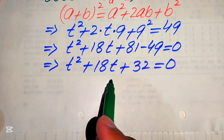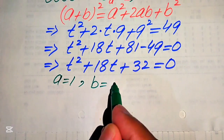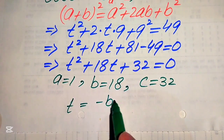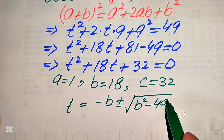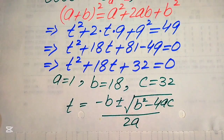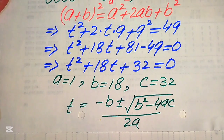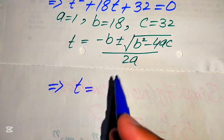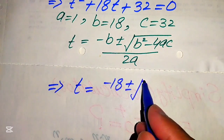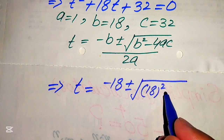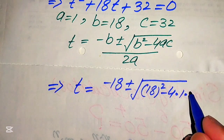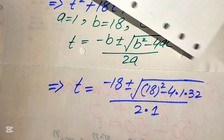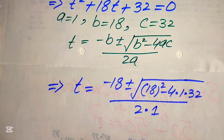We apply the quadratic formula. The coefficients are a = 1, b = 18, and c = 32. The quadratic formula is t = (-b ± √(b² - 4ac)) / (2a). Substituting the values: t = (-18 ± √(18² - 4 × 1 × 32)) / (2 × 1).